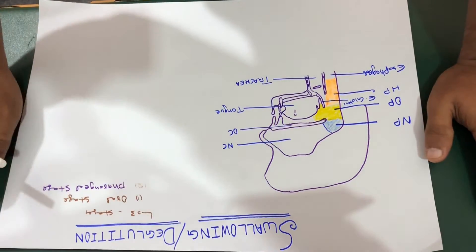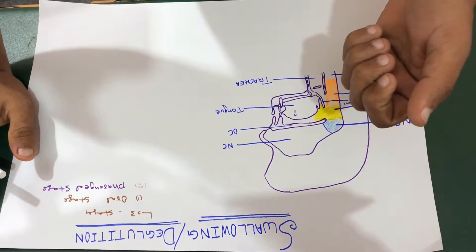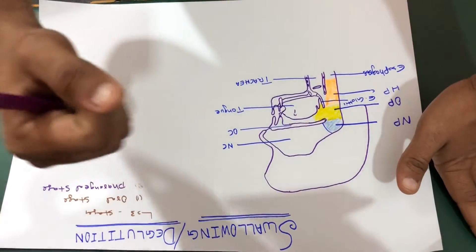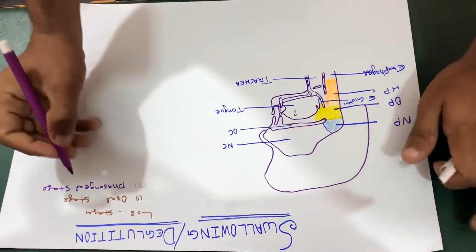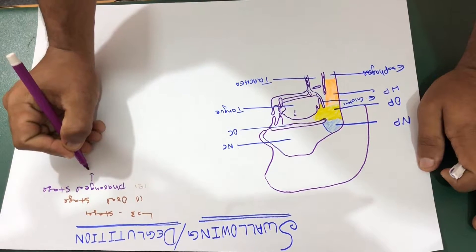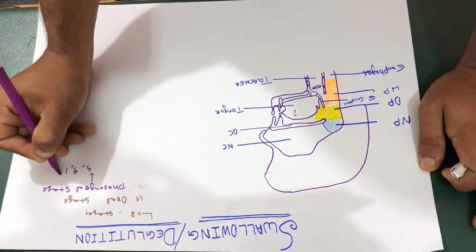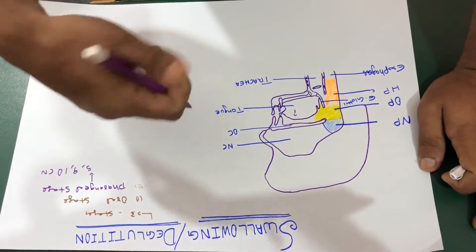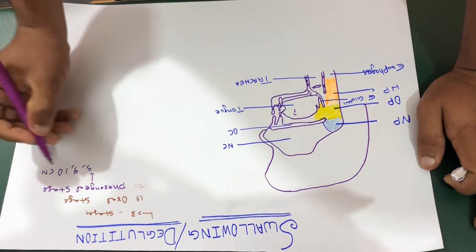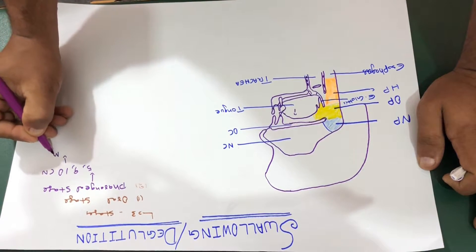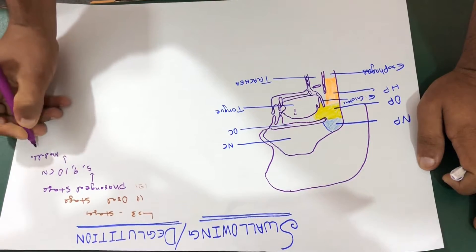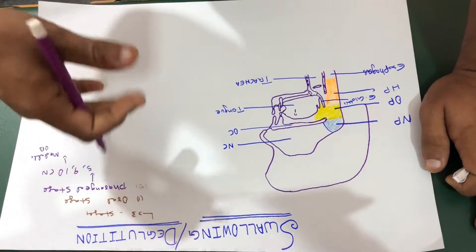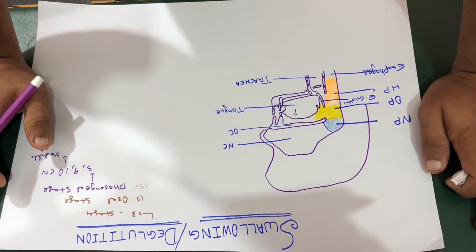Impulses from them go upward via your five, nine and ten cranial nerves to the swallowing center in your medulla oblongata.